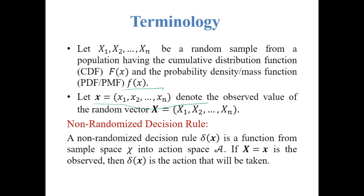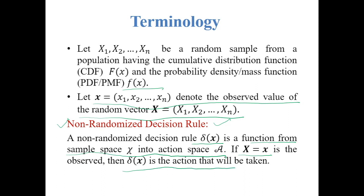Let x denote the observed value of the random vector; that means small x basically denotes the observed data. A non-randomized decision rule is defined as delta(x), a function from the sample space chi into the action space. If x equals x is the observed value, then delta(x) is the action that will be taken — when x is observed, delta(x) simply indicates an action.